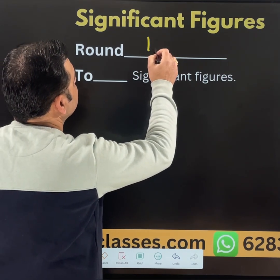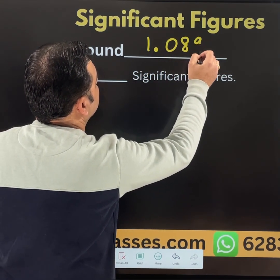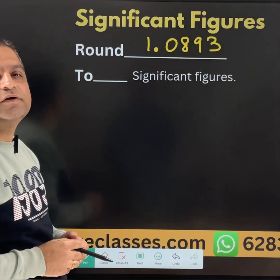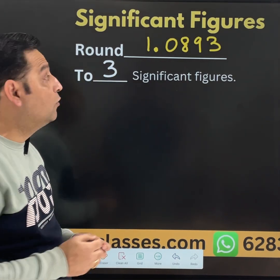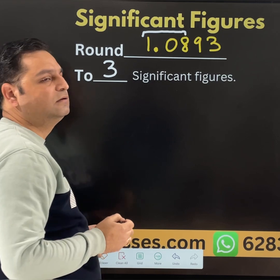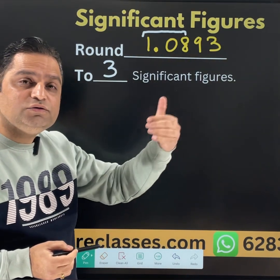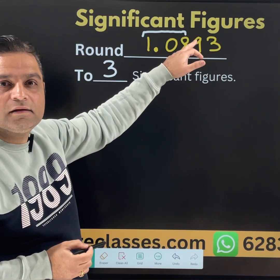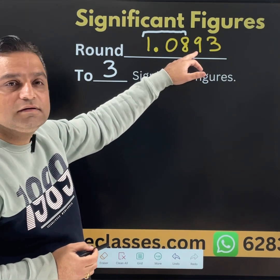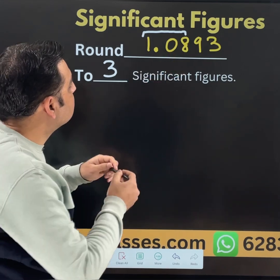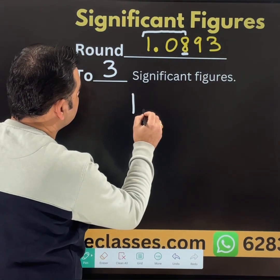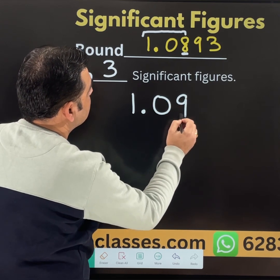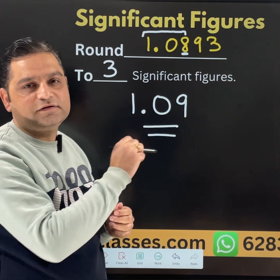Let us suppose we have 1.0893 and we need to write up to 3 significant figures. Again the first 3 figures are 1.08. But when we check the next number, it is 9, which is greater than 5. That means this 8 will be increased by 1. So we get 1.09 — that is the answer in 3 significant figures.